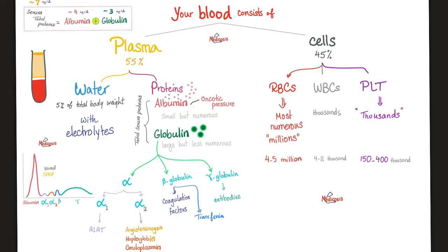Haptoglobin was discussed in my videos on hemolytic anemia. Ceruloplasmin is related to Wilson's disease and copper metabolism. Beta globulins include coagulation factors — all except calcium, which is factor 4 — and transferrin, the iron transporter in the blood. If it ends in '-in,' it's typically a protein. Gamma globulins are your immunoglobulins, also known as antibodies: IgG, IgM, IgA, IgE, and IgD.